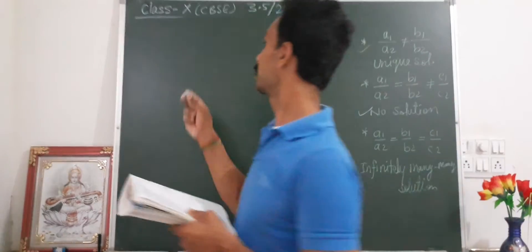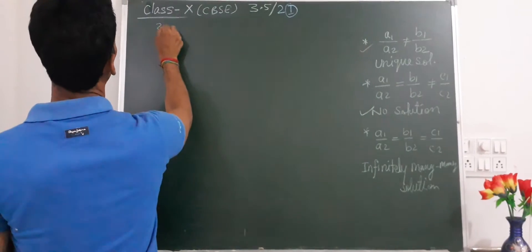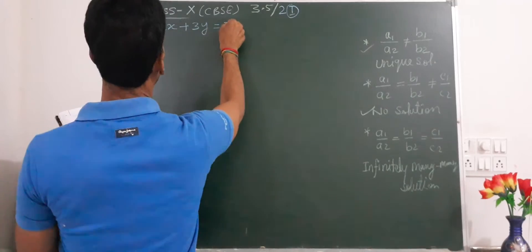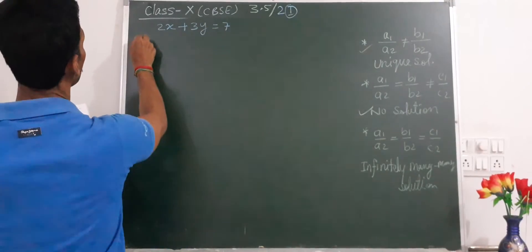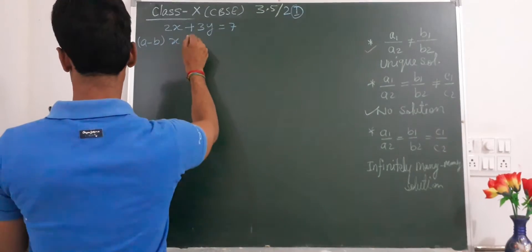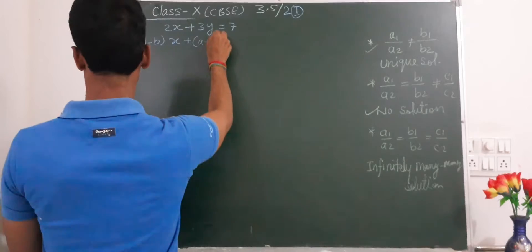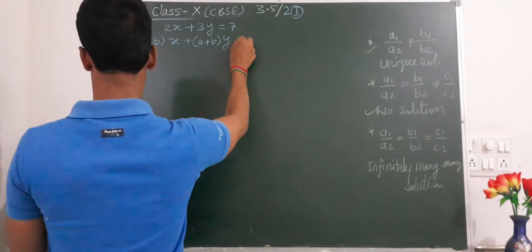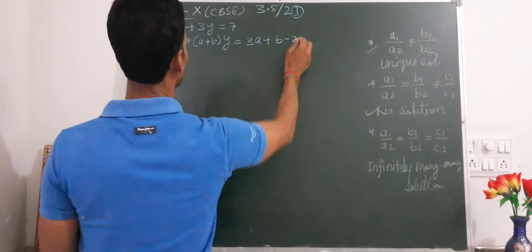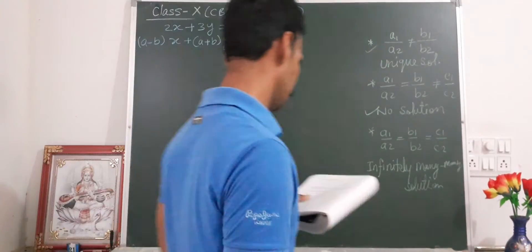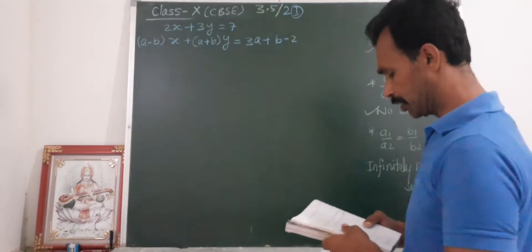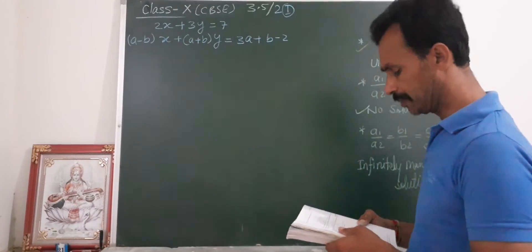The equations are: first, 2x plus 3y equal to 7, and second, (A minus B)x plus (A plus B)y equal to 3A plus B minus 2. The equations have an infinitely many solutions condition to follow.